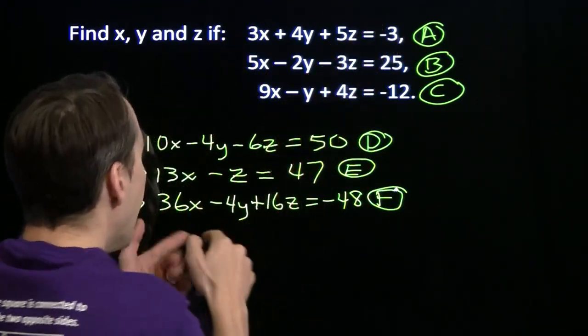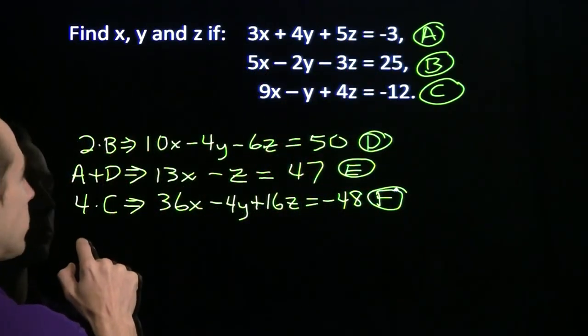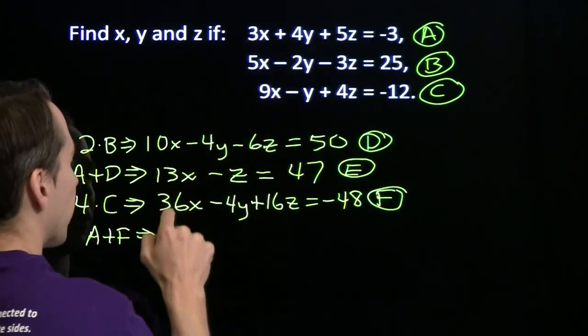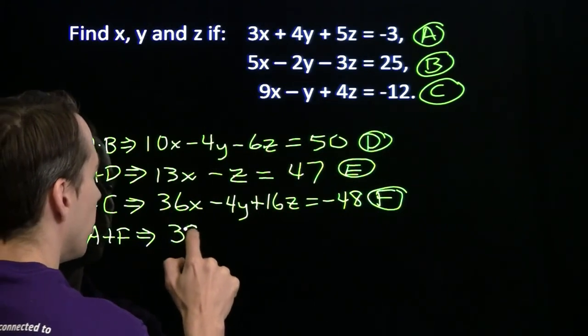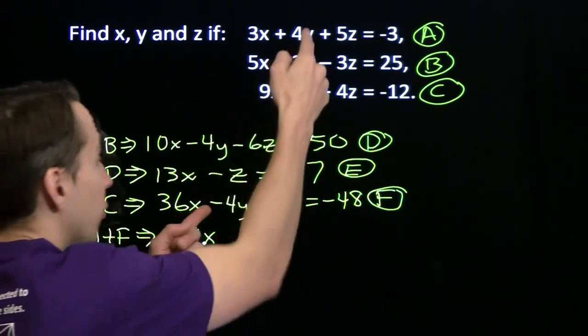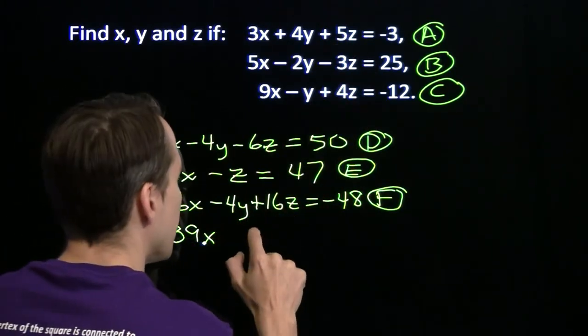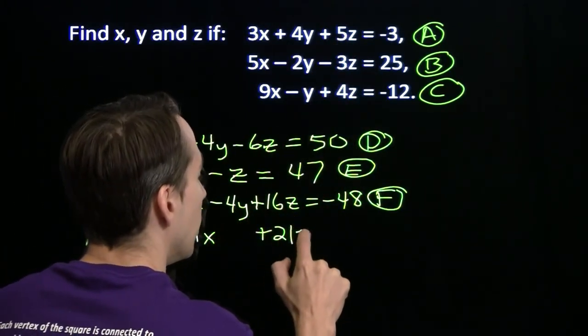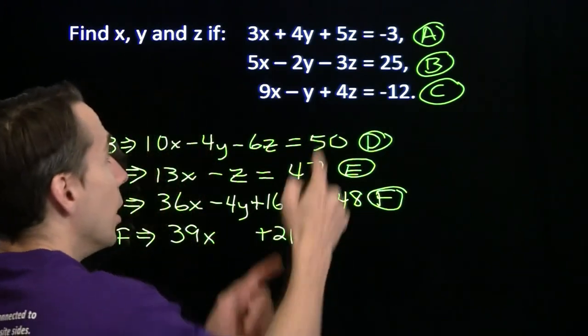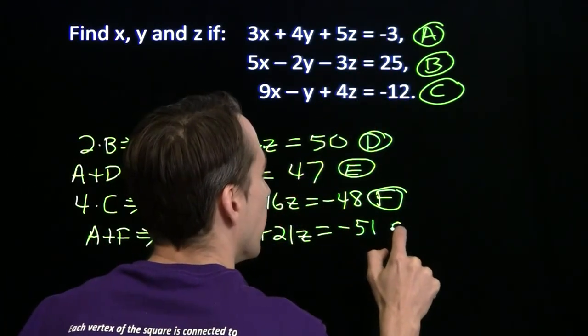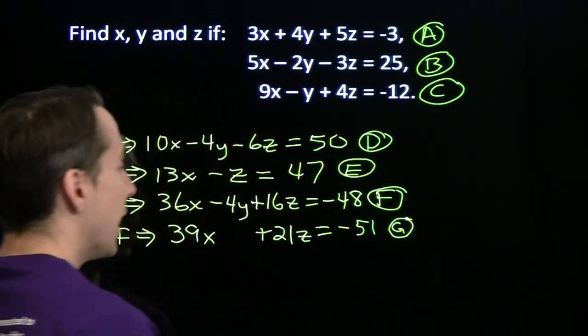We're going to take F and add it to A. When we add A and F, the y is going to eliminate. A plus F: 3x plus 36x is 39x. 4y minus 4y, no more y. 5z plus 16z is 21z. Minus 3 minus 48 is minus 51, calling that equation G.